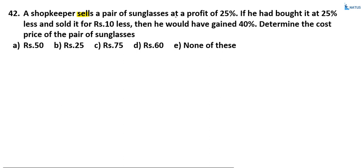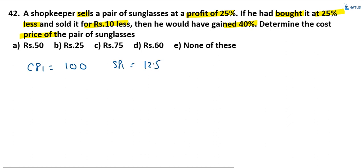A shopkeeper sells a pair of sunglasses at a profit of 25%. If he had bought it at 25% less and sold it for 10 rupees less, then he would have gained 40%. Determine the cost price of the pair of sunglasses. Let CP1 equal 100. SP1 equals 25% profit, that is 125.